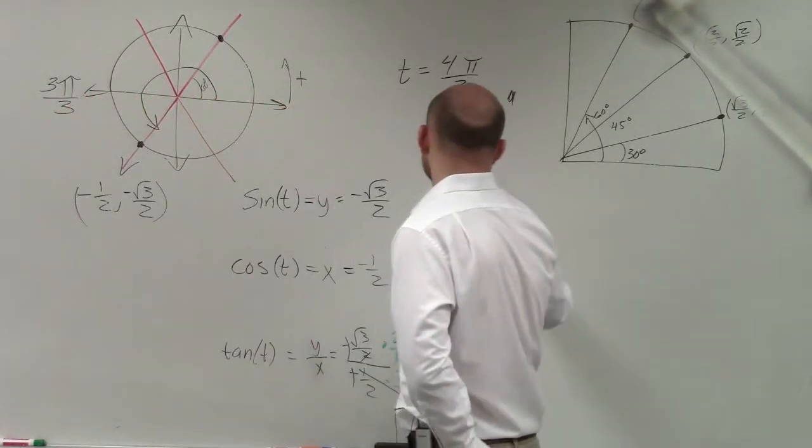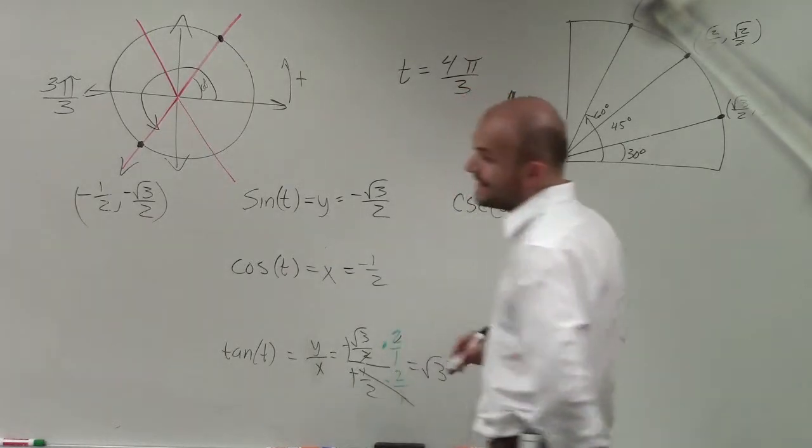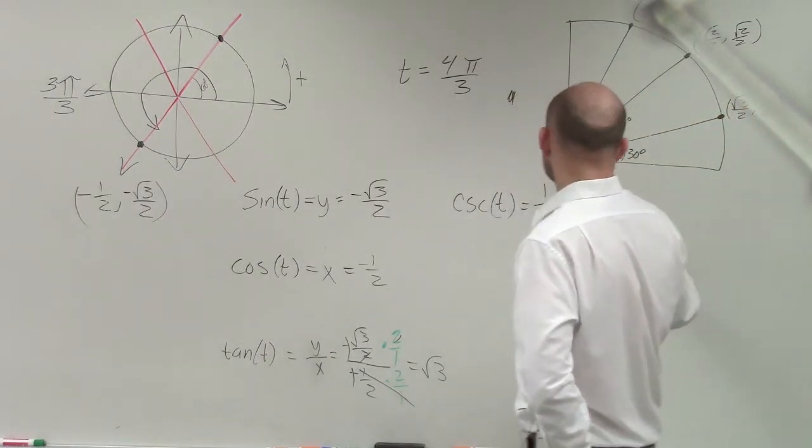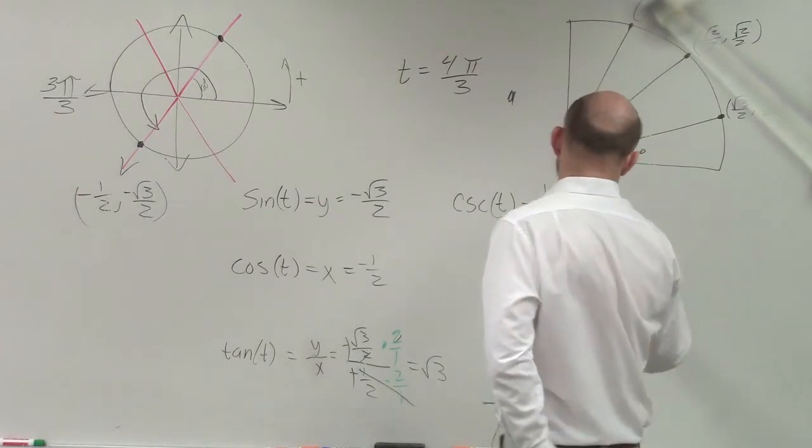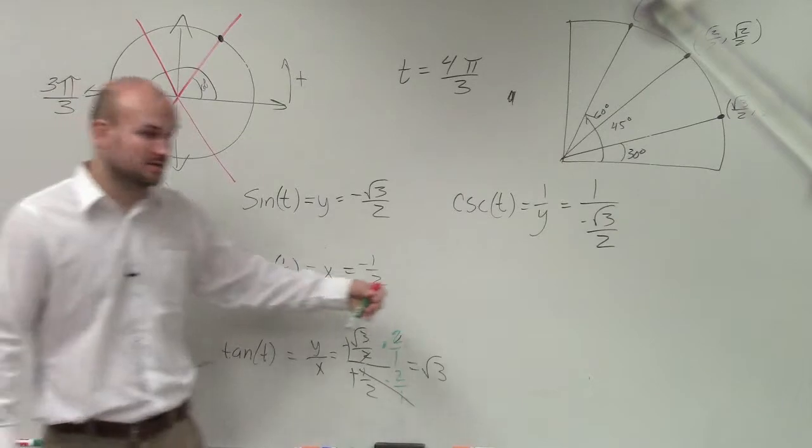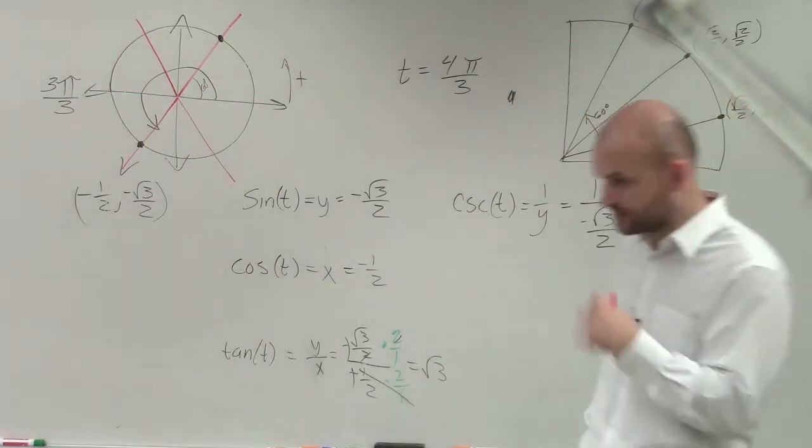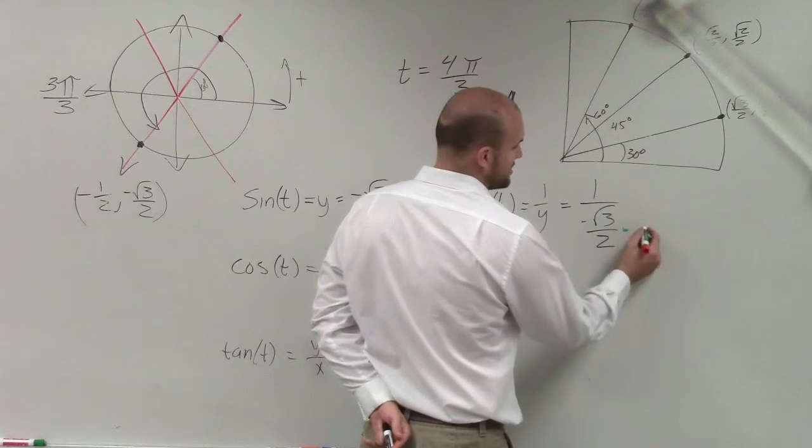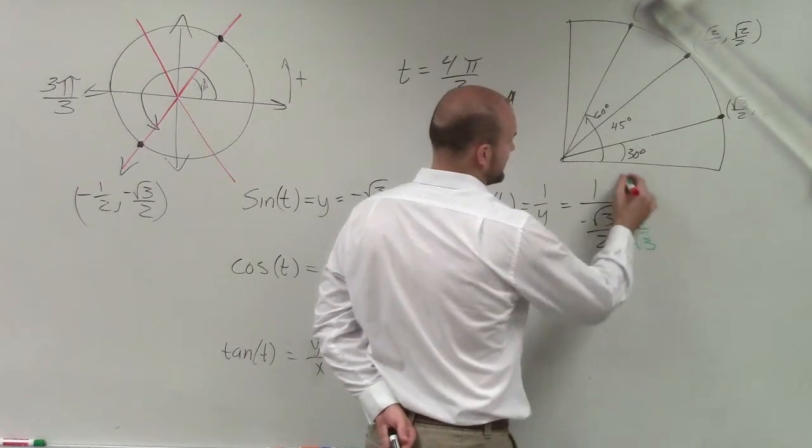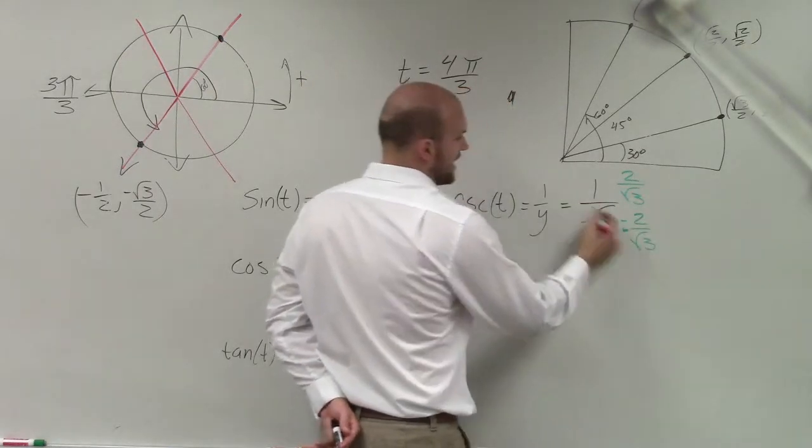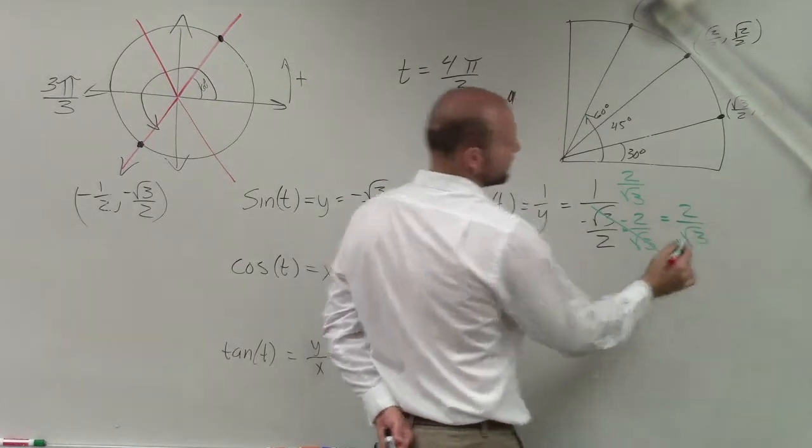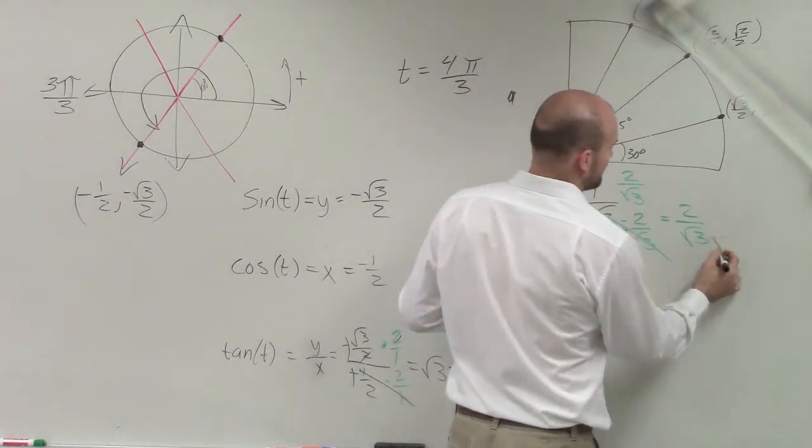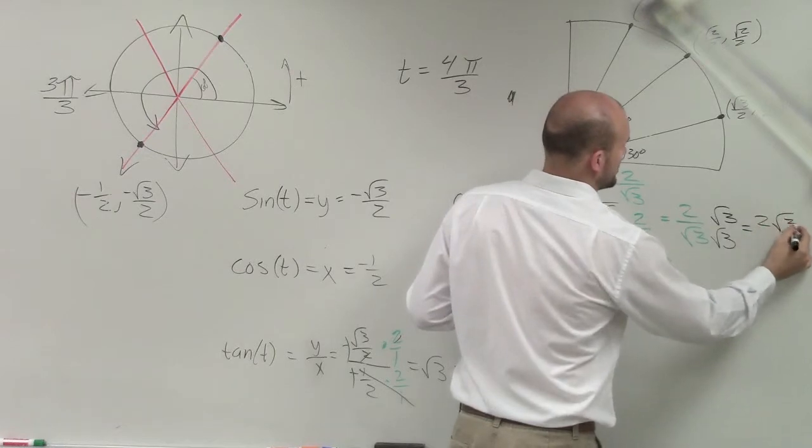Now we've got to do the reciprocal functions. The cosecant of t, when on the unit circle, represents 1 over y, which is now going to be 1 over -√3/2. Again, I'm going to work these out long for this section, but then I'm going to start making these a little quicker. I multiply by the reciprocal, 2 over the √3. That now goes to 1, and I'm left with 2 over radical 3. But we can't leave the √3 on the bottom, so we'll multiply by √3 on top and bottom. Therefore, my final answer is 2√3/3.